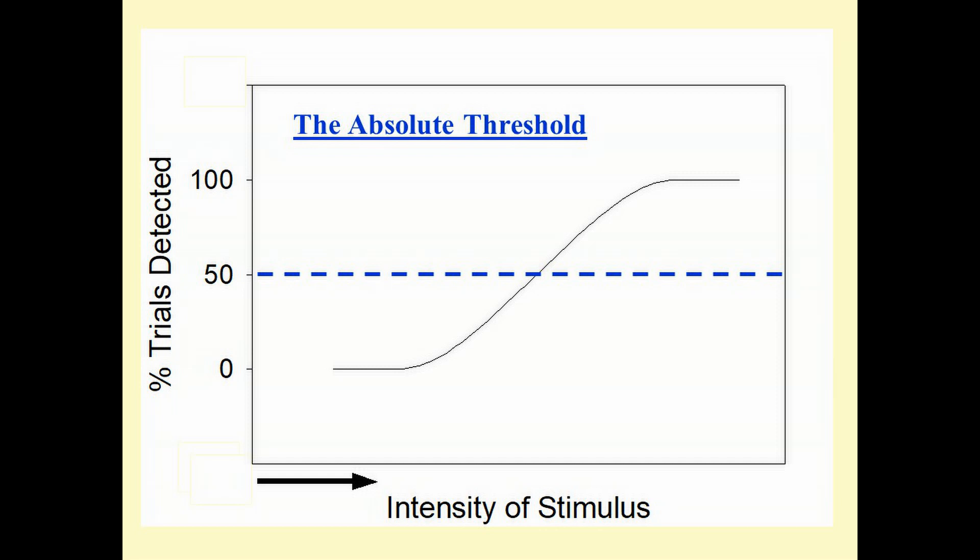The absolute threshold, according to this diagram, is that point, that intensity of a stimulus that is at the 50 percent criterion. This takes us back to the definition: the absolute threshold is the minimum magnitude of a stimulus that can be detected 50 percent of the time.